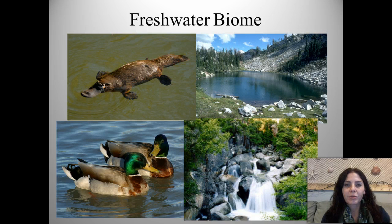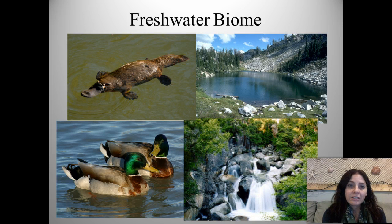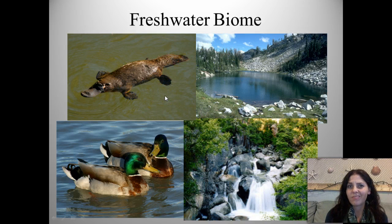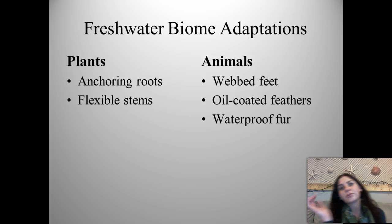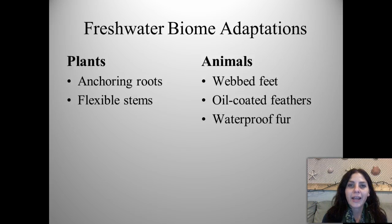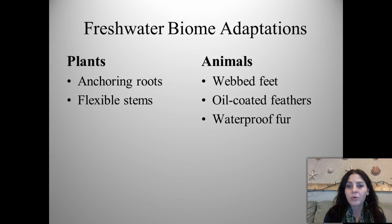We're going to start with the freshwater biome, which includes rivers, lakes, and streams. You'll find freshwater fish, various waterfowl such as ducks, seagulls, plant life, waterfalls, and even the duck-billed platypus. Plant adaptations include anchoring roots to keep them attached to rocks or substrates, and flexible stems so they can move with the flow of water. Animal adaptations include webbed feet, oil-coated feathers, and waterproof fur.